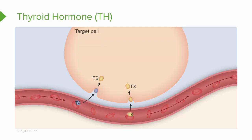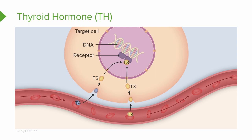The thyroid hormone is unique in that it affects virtually every cell in the body, with receptors on almost every cell. It enters the target cell and binds to intracellular receptors within the nucleus, then triggers transcription of various metabolic genes.